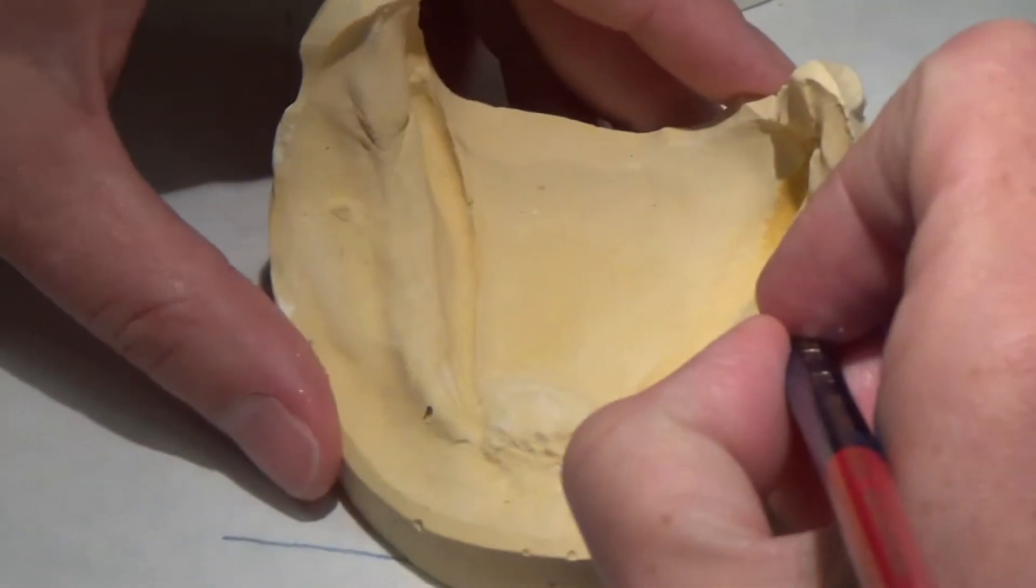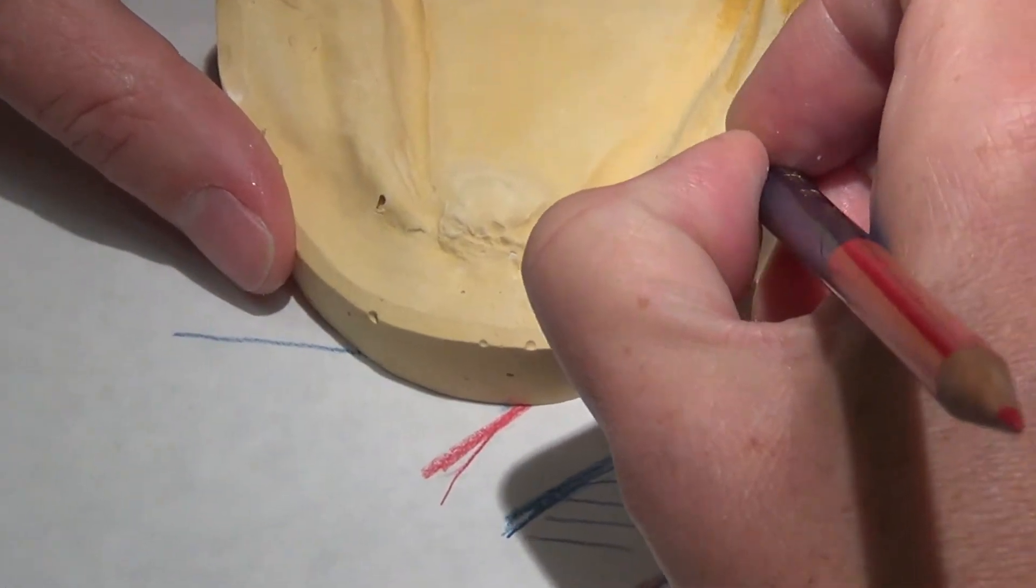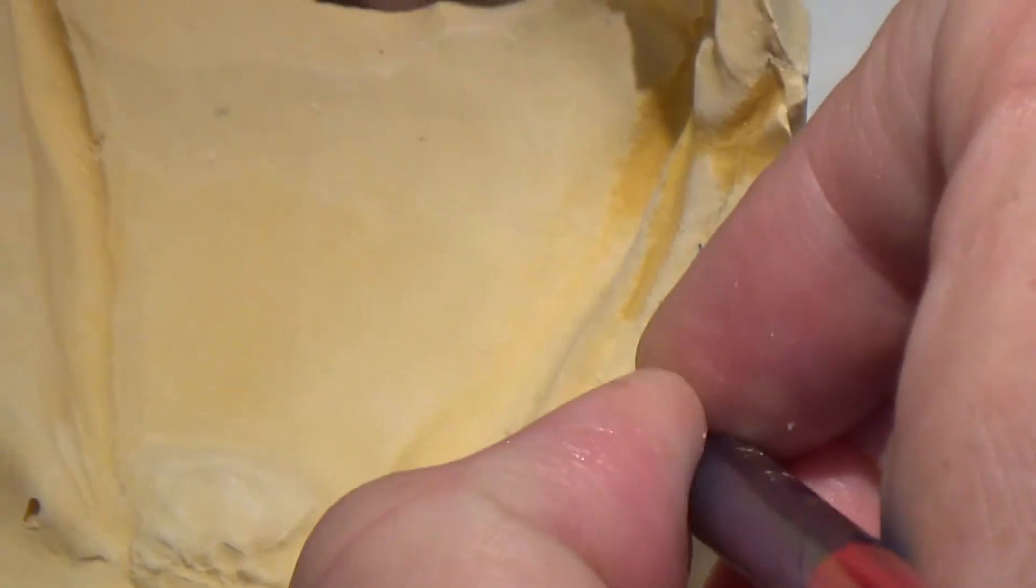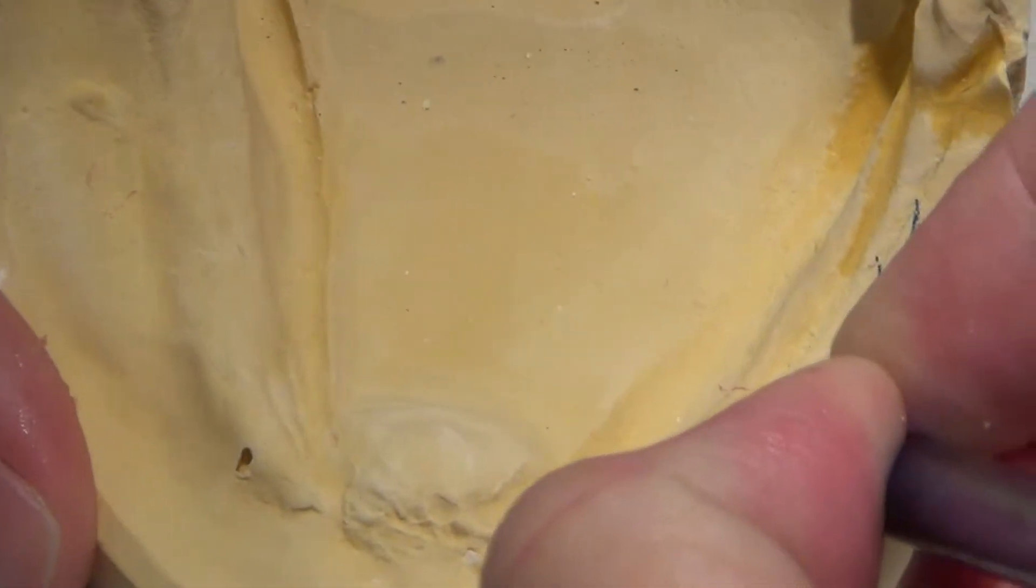So on the mandible, I'm going to identify the buckle shelf. Hers are rather large, and I'm going to try to take advantage of quite a bit of this space here.